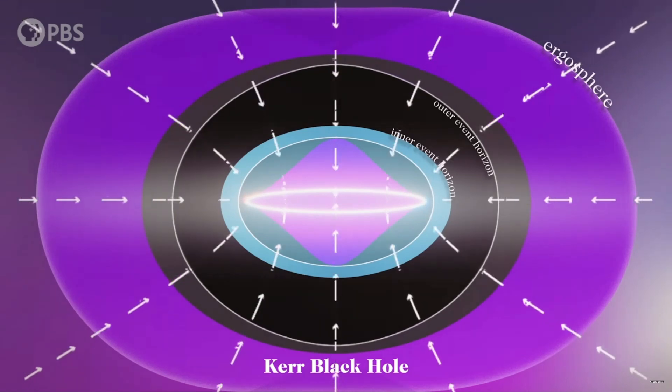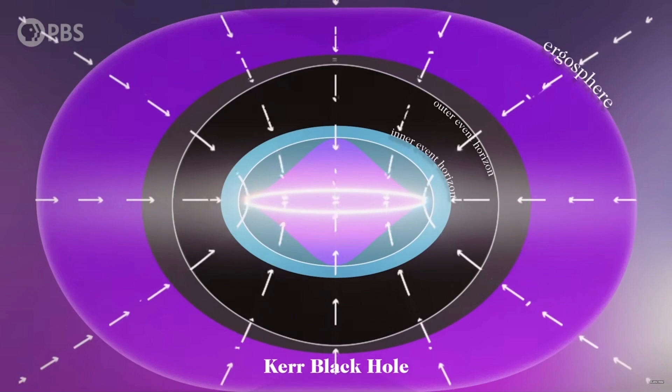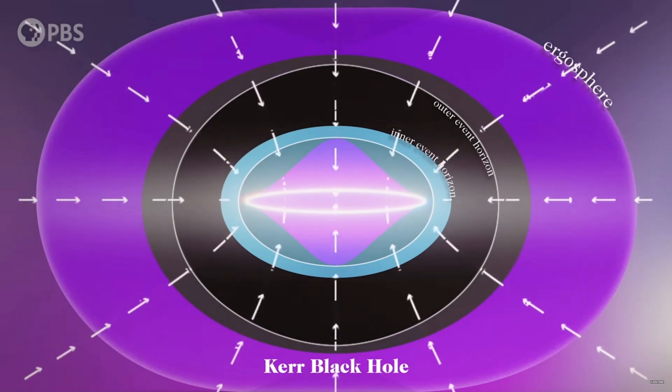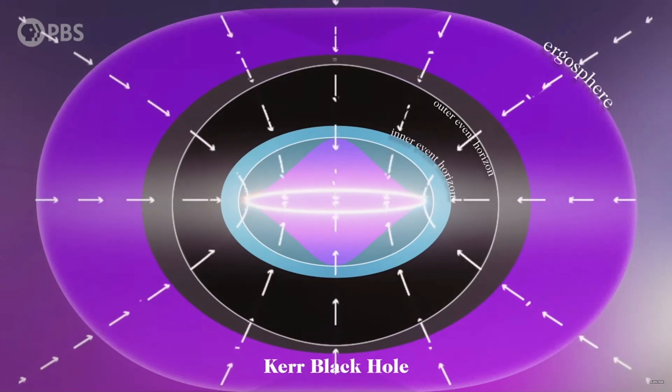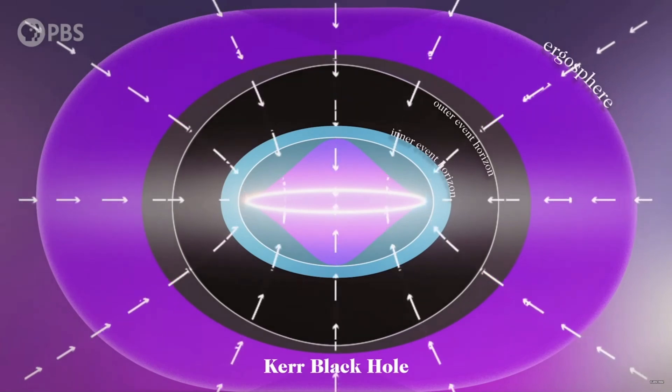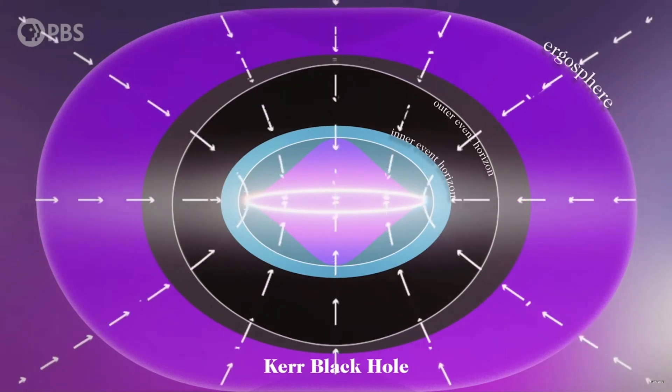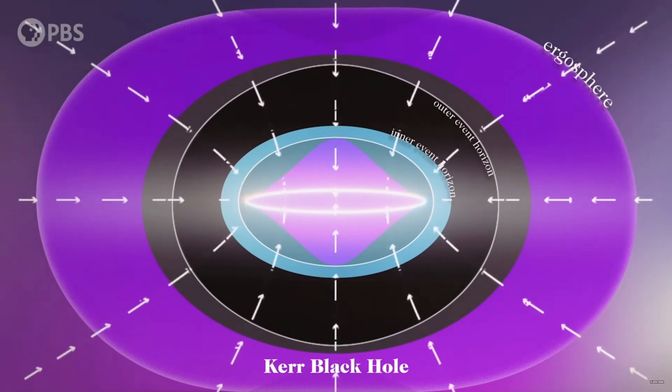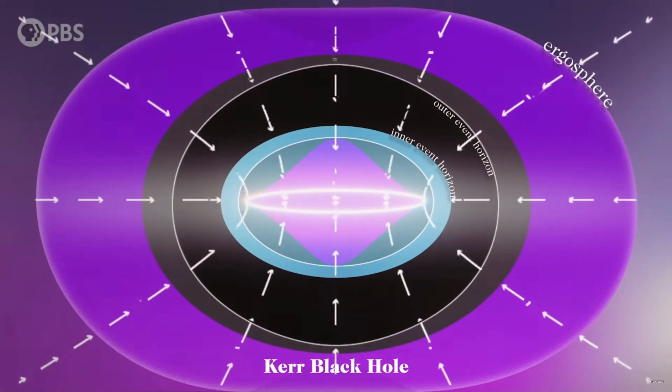Just like before with the spinning Kerr black hole, the size of the inner event horizon increases proportionally to the charge of the black hole rather than the speed of its spin. But how would having two event horizons get us any closer to observing a singularity, you may ask?